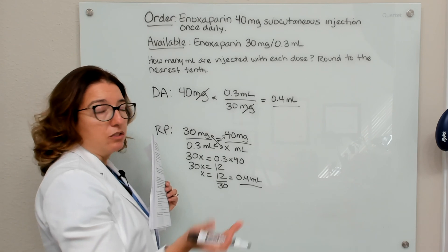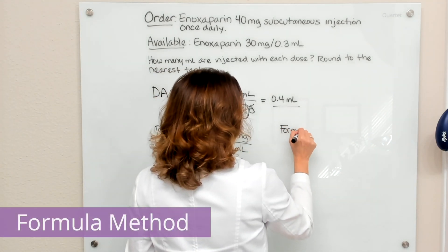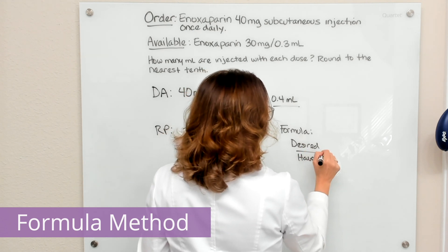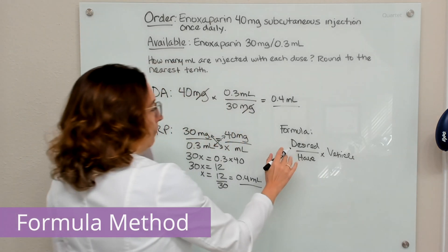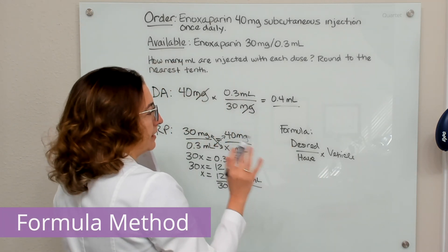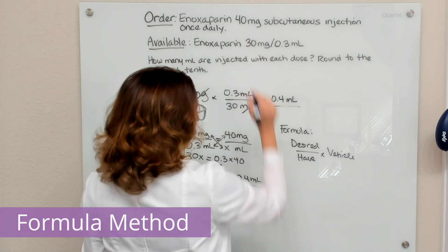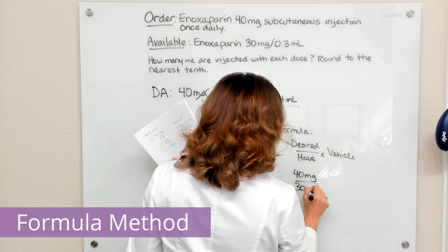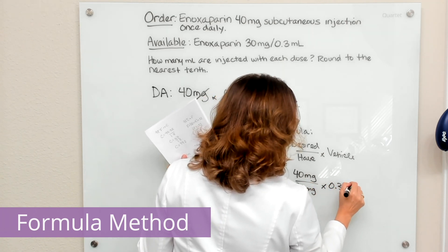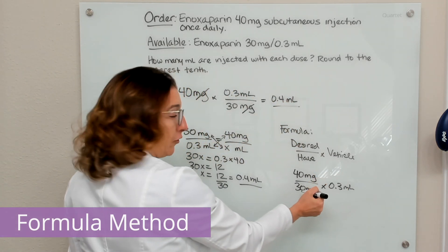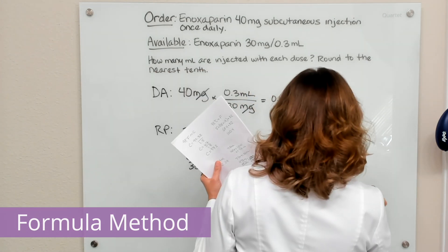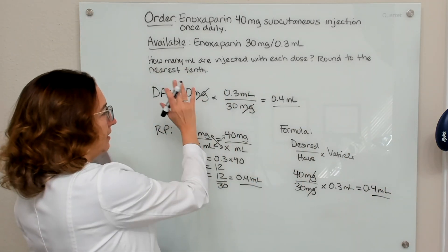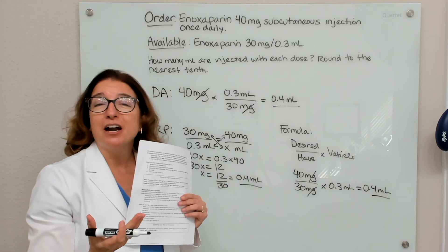The last method we can use is the formula method: desired over have, times vehicle. We need to make sure our desired and have doses are in the same units, which they are. What we desire is 40 milligrams; what we have is 30 milligrams in 0.3 ml of solution — that's the vehicle. Milligrams cross off, and multiplying this out gives us 0.4 ml — the same answer. Each of those three methods gets you to the same answer; you just need to figure out which way makes the most sense to you.